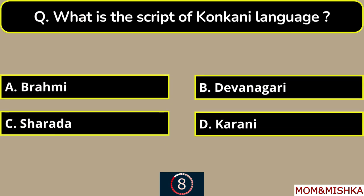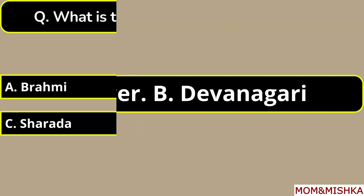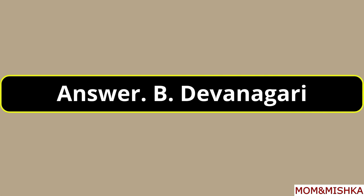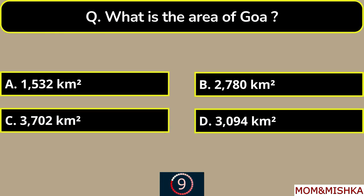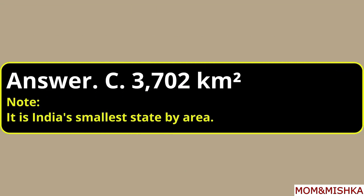What is the script of Konkani language? Devanagari script, option B. What is the area of Goa? It's 3,702 km², option C. Goa is India's smallest state by area.